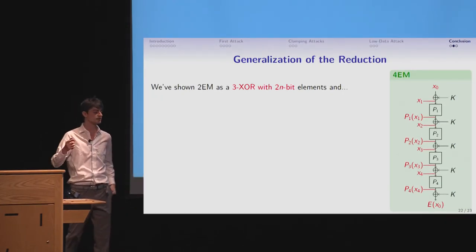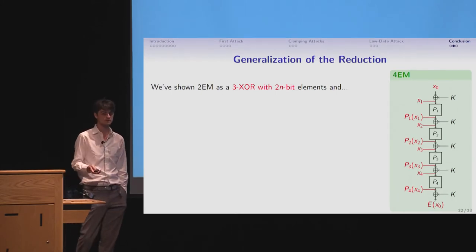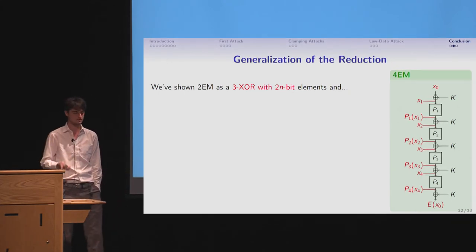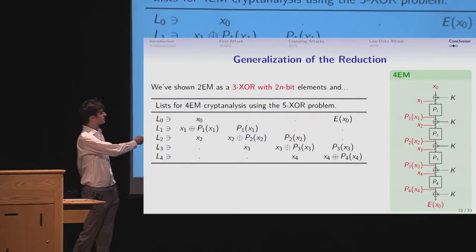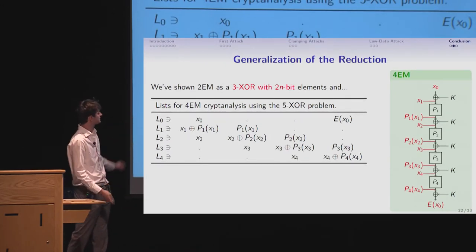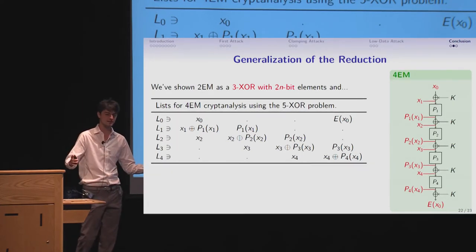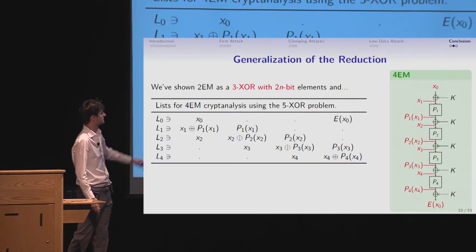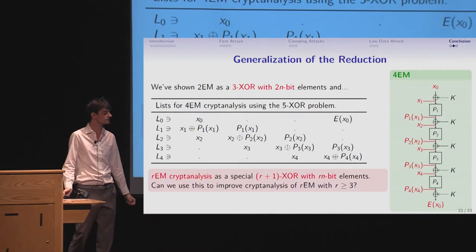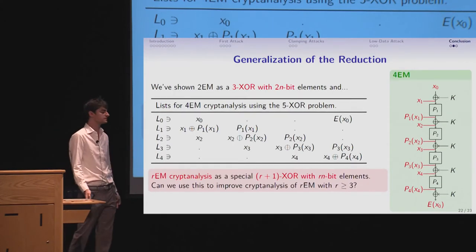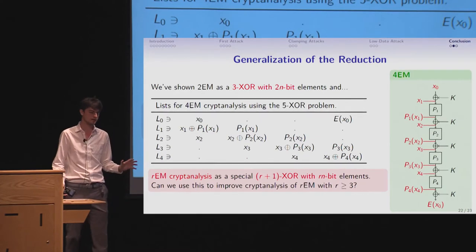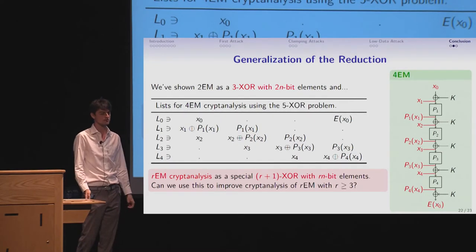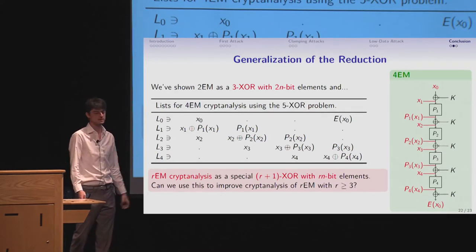Now, another remark. I've shown you that the 2 round Even-Mansour, I can rewrite it as a 3-XOR problem with two n-bit elements. What about the 3 round, 4 round? Now, if I get the 4 round Even-Mansour, yes, I can write it as a 5-XOR problem, just like this. It's a 5-XOR problem with four n-bit elements getting bigger. And you can see there's a very strong structure now. You have zeros popping up. But who knows? In general, you can write R round Even-Mansour cryptanalysis as a special kind of R plus 1 XOR with R times n-bit elements. And maybe that's a good start to start thinking for new ways to cryptanalyze this iterative construction.